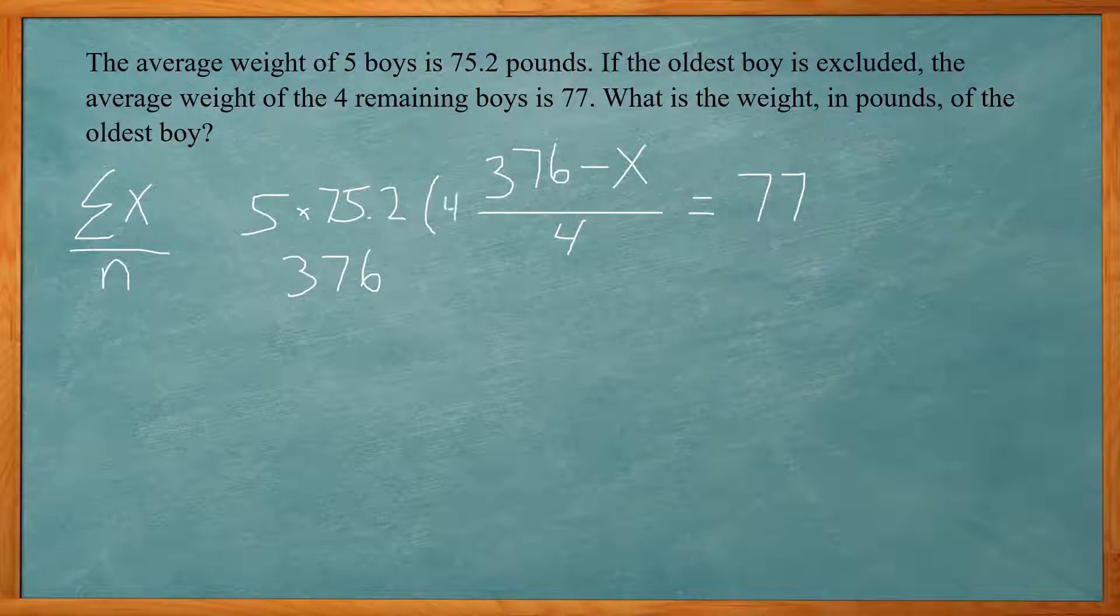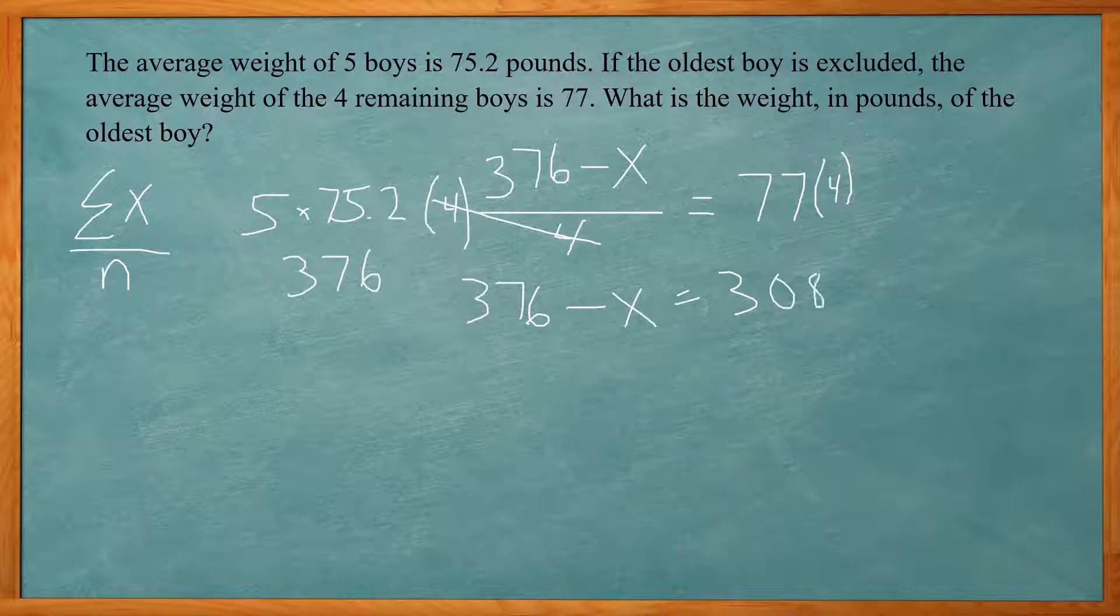And cancel out the four here. Give me 376 minus x equal to 308. And I could add x to both sides just to make it positive on this side. So 376 minus 308 will equal x. That comes out to 68. So the weight of the oldest boy is 68 pounds.